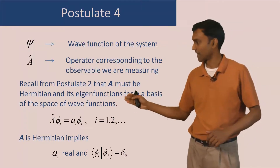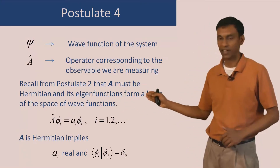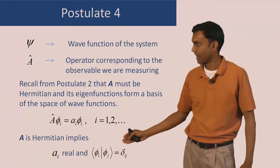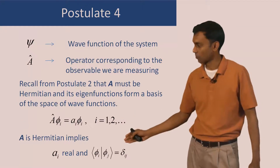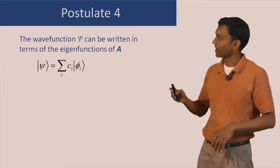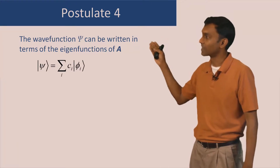Its eigenfunctions, given by the eigenvalue equation A phi_i equals A_i phi_i for various i's, should satisfy certain conditions. In other words, the eigenvalues should be real and the eigenfunctions should be orthonormal, as given by the condition we discussed during postulate 2. Now since the phi_i's form a basis of the space of wave functions, I can write the wave function as a linear combination of these eigenfunctions.